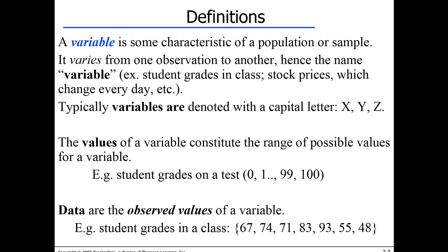In statistics, a variable is something that varies — some characteristic of a population or sample that differs from one observation to another. For example, every person has a different salary. If I take all people at CNU and record their salaries, that collection of salaries is the variable, because salary differs from person to person. Same with cars: if I take 2,000 cars and calculate average MPG for each, each car's MPG will be slightly different. MPG is a variable because it varies from one observation to another.